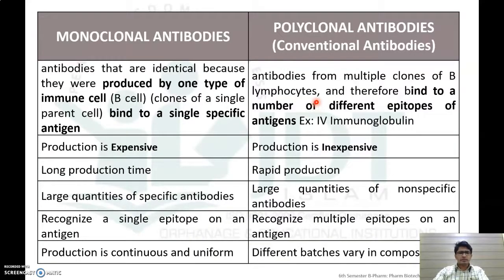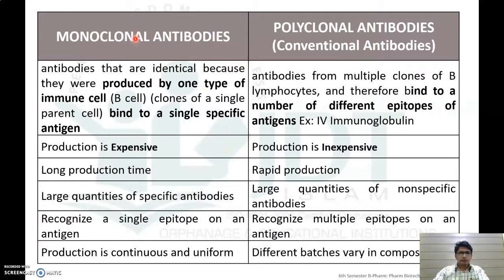Monoclonal antibodies are identical antibodies produced by one type of immune cell (B cells) and bind to a specific antigen. Polyclonal antibodies come from multiple clones of B lymphocytes and bind to a number of different epitopes of antigens. Monoclonal antibody production is expensive, while polyclonal antibody production is inexpensive.